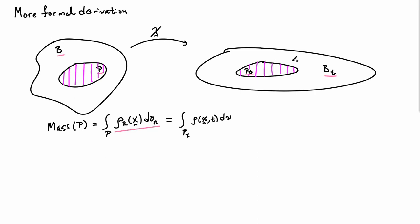And, but I also know that that's equal to the mass of PT, which I can write as the integral over PT of the spatial density, ρ, as a function of little x and time, integrated dV. And this equality here, that's really the statement of global mass balance. That's saying that the mass of P is equal to the mass of PT.